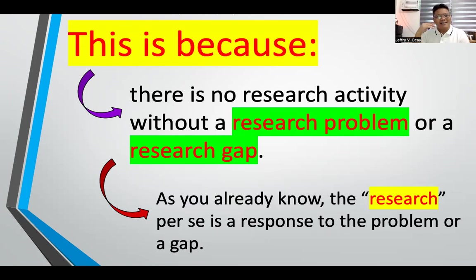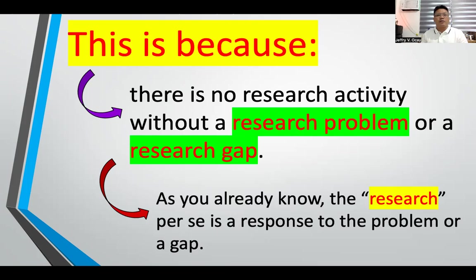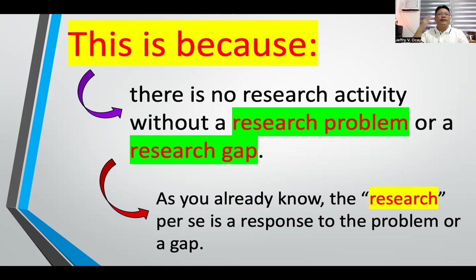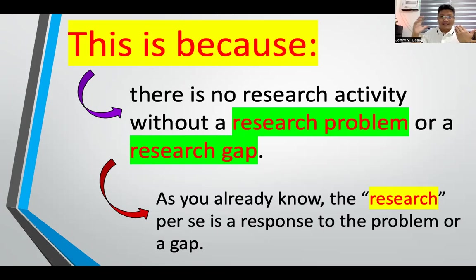As master's or doctoral students, the thesis at the end of your course is not just a requirement to get the degree. In graduate school, we are training you to become researchers, because research is very important in society. Some novel and innovative solutions to problems are products of research — think of the vaccines now available. These vaccines were produced by scientists because there was a huge problem threatening us: COVID-19. The scientists conducted research because there was a problem they wanted to see addressed.